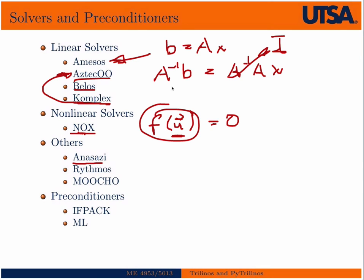There's other types of solvers. Anasazi is an eigenvalue solver. Rythmos is a sort of ODE time integrator with some advanced kind of multi-step algorithms. You can think of this as like in MATLAB you have ODE45. This is the parallel ODE45 on steroids, if you will. So it has much more advanced solvers than just simple Runge-Kutta in there. Mucho is an optimization, constrained optimization solver.